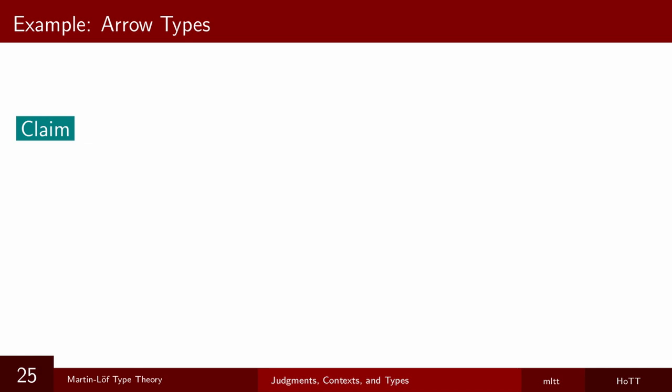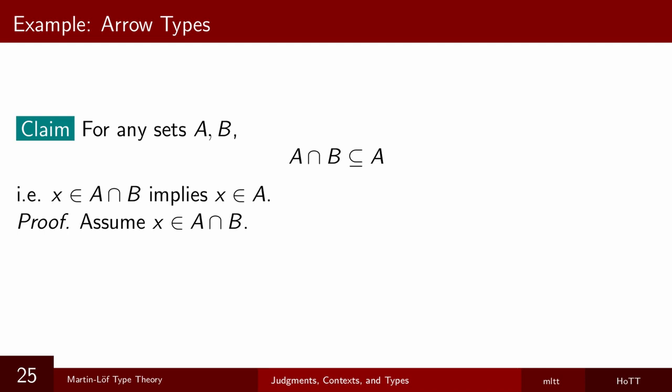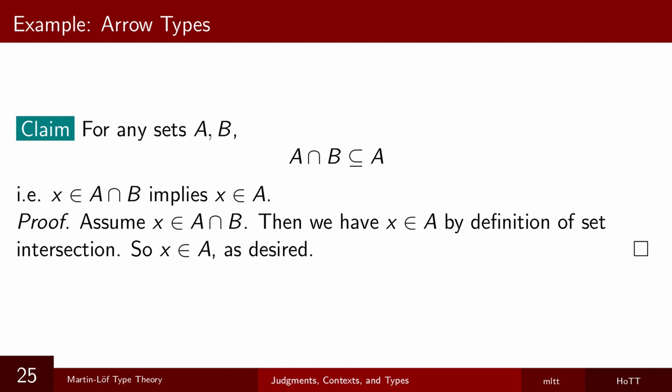As a simple mathematical example, take this statement. For any sets a, b, the intersection of a and b is a subset of a. Using the standard definition of subset, what this claim says is that for any x, if x is in a intersect b, then x is in a. So we need to prove this implication for arbitrary x. The elementary set theoretic proof of this would be pick arbitrary x, assume x is in a intersect b. By definition of set intersection, x is in a and x is in b, so we have that x is in a. Done. Assume the antecedent, prove the consequent.